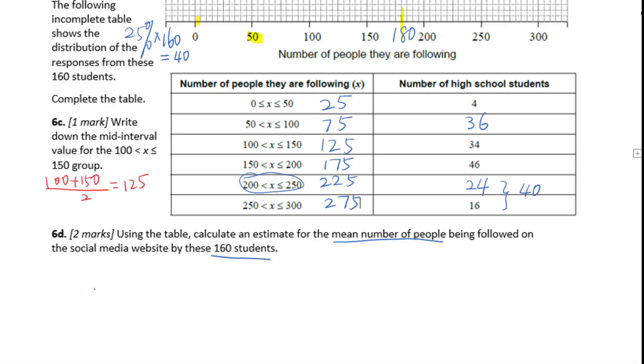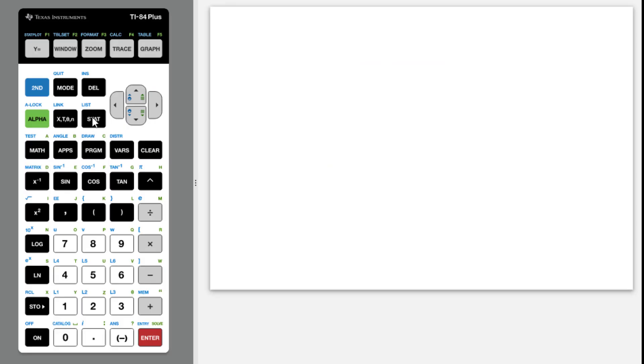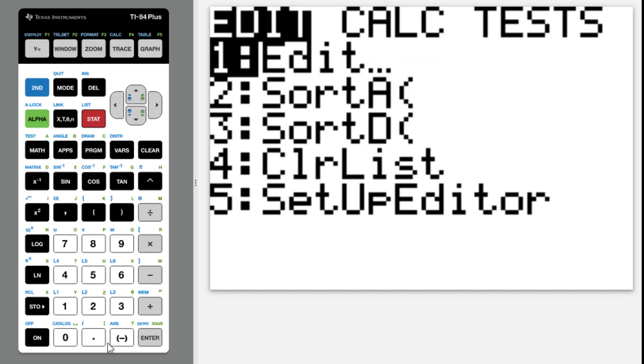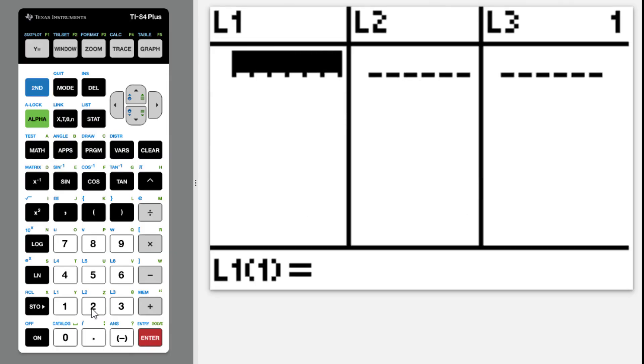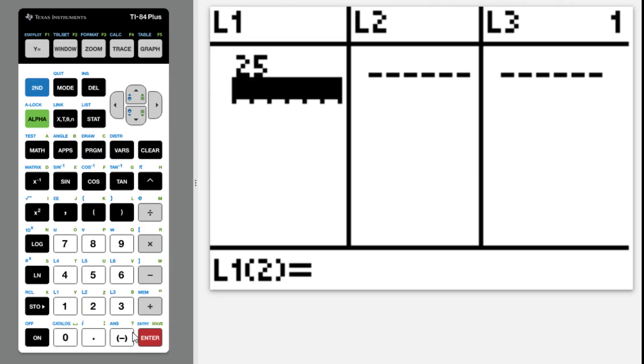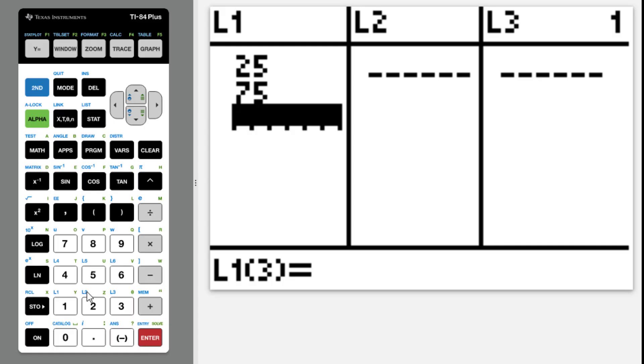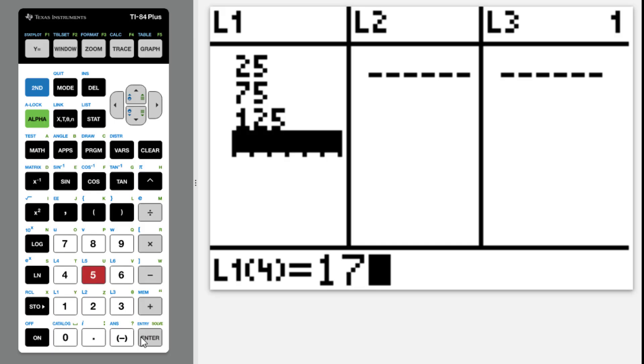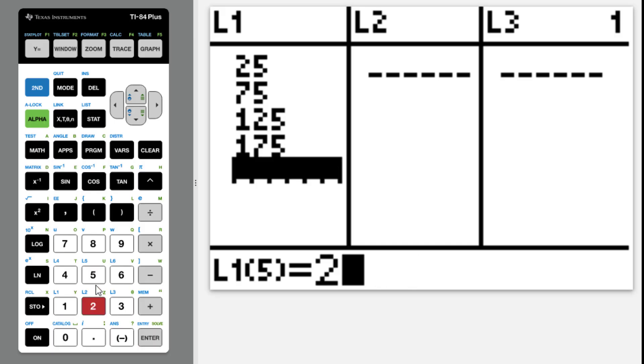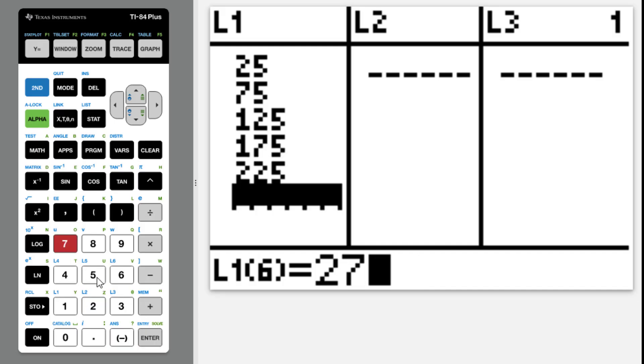So we go to the graphing calculator. We go to stat, edit. L1 is 25, 75, 125, 175, 225, 275.